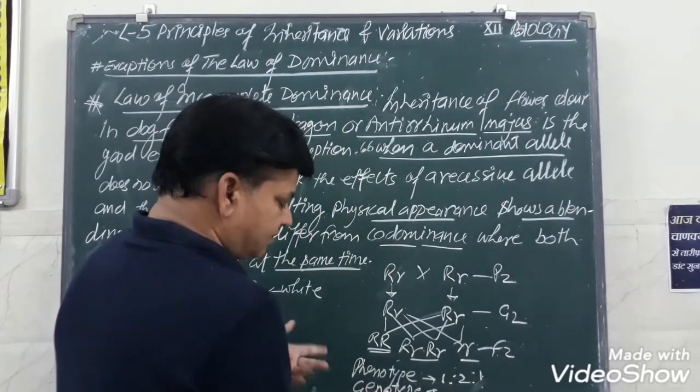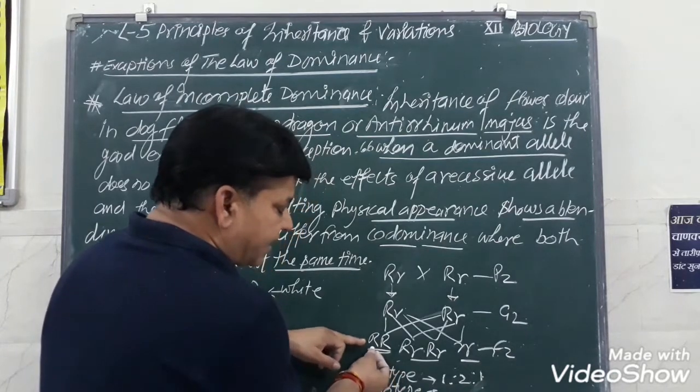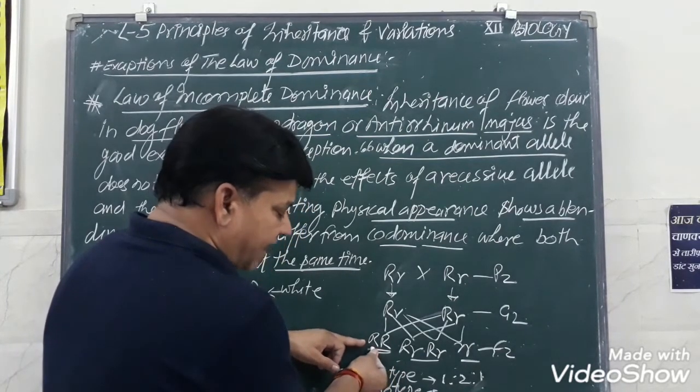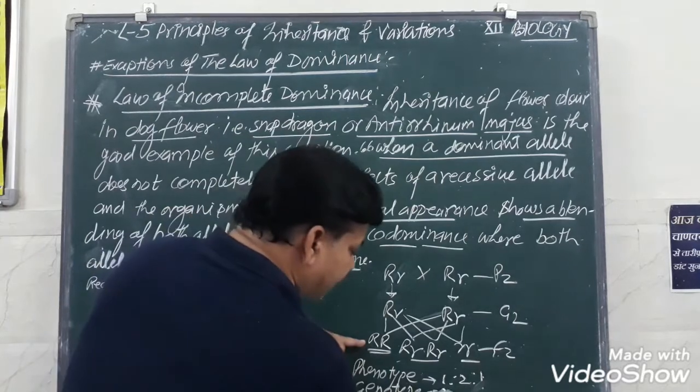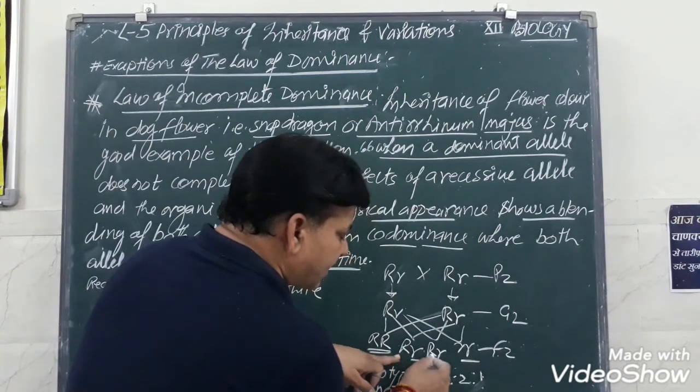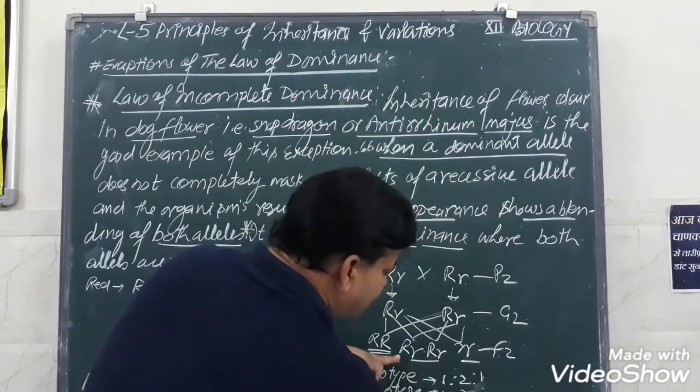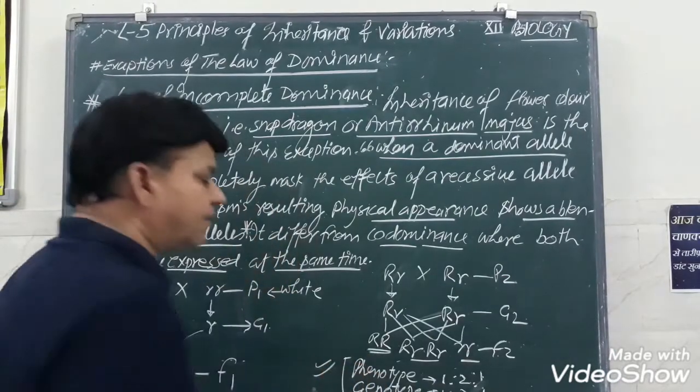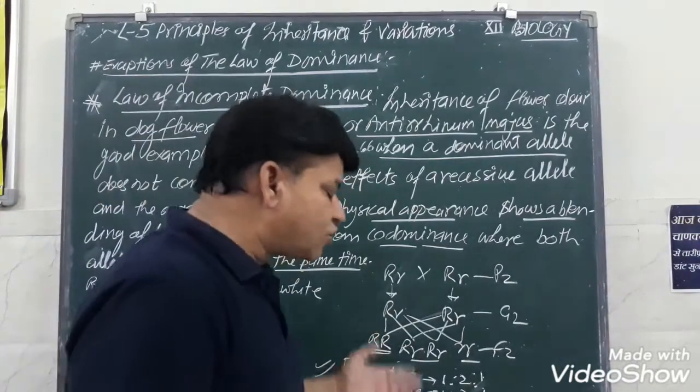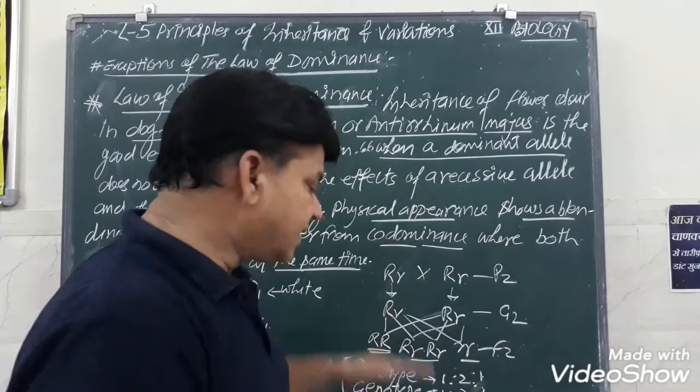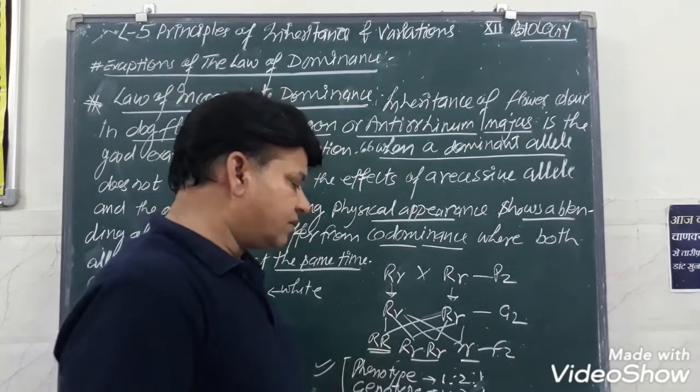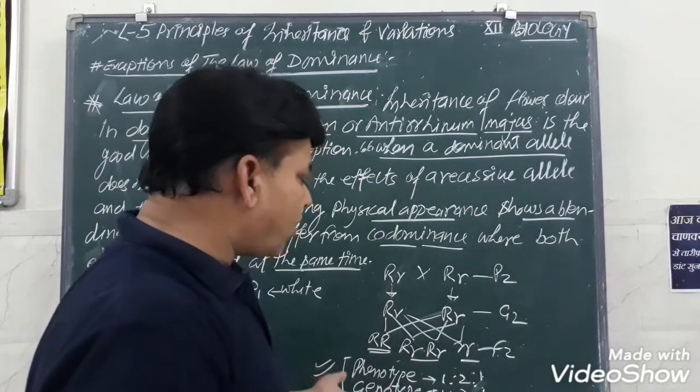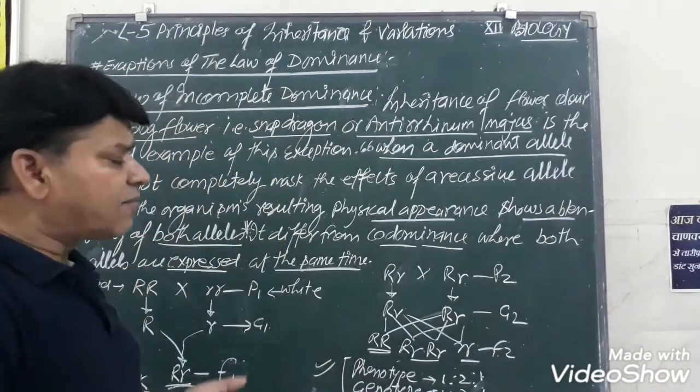Genotype ratio will be by the allelic pair. Capital R capital R, this is 1. Capital R small r, that is 2. And small r small r, that is 1. This is the most important point. Here, both the phenotype and genotype were same. That is 1 ratio 2 ratio 1. This is the law of incomplete dominance.